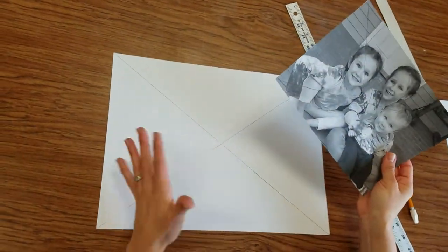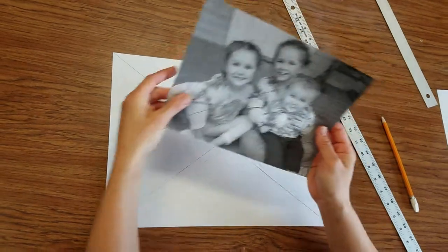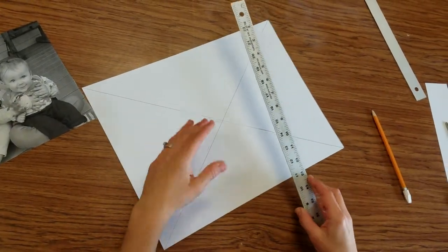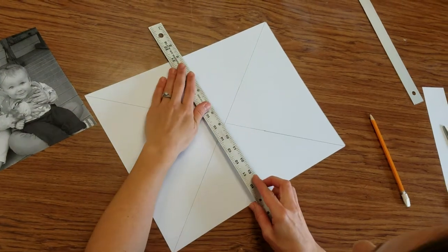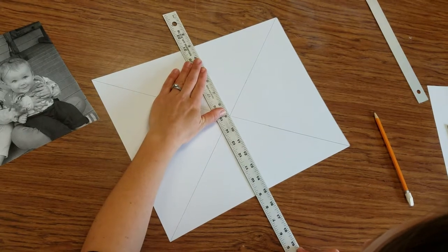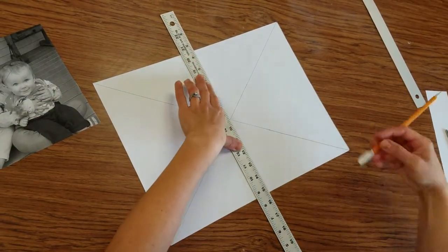Now from here we're going to do a series of lines to break up this X into boxes. The first line we want is a vertical line. If you've got a T square I would recommend using that for this. But you're going to want to line your ruler up vertically. Make sure it's not slanted one way or the other. So get it as vertical as possible.